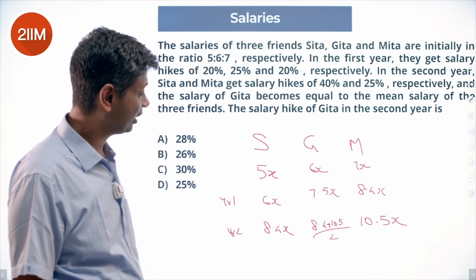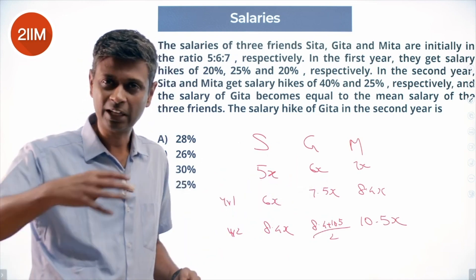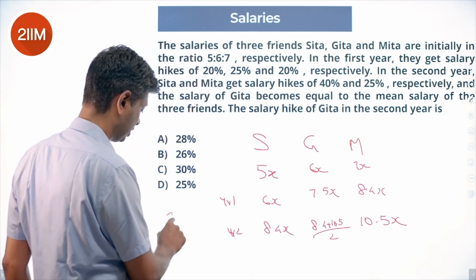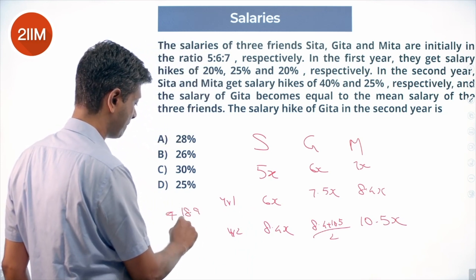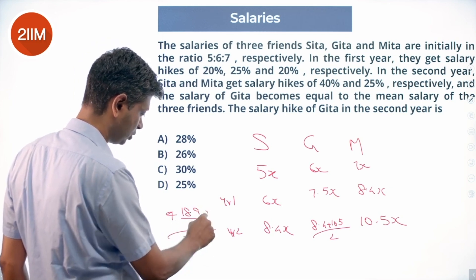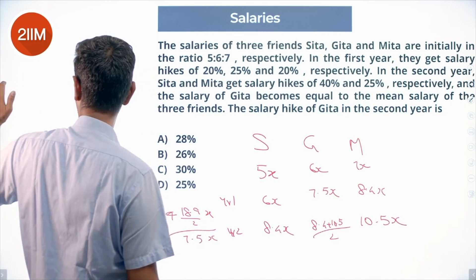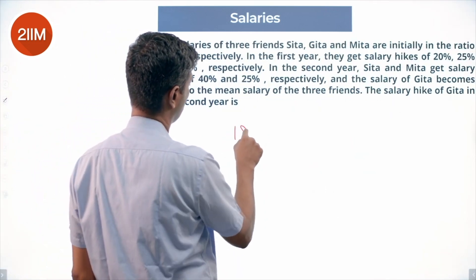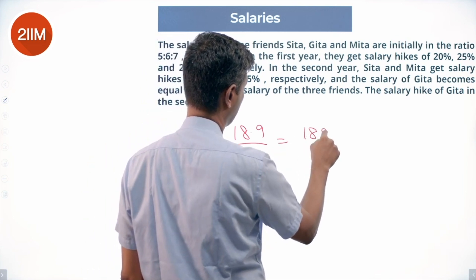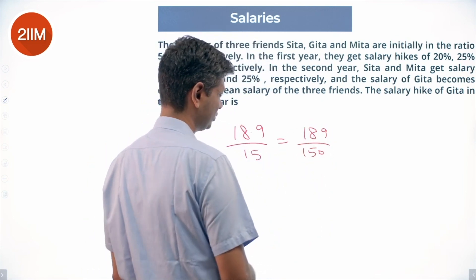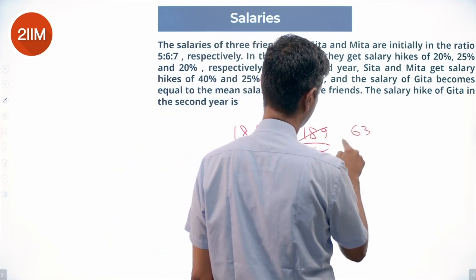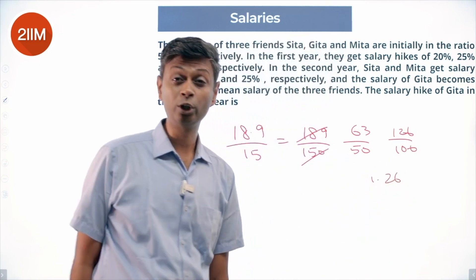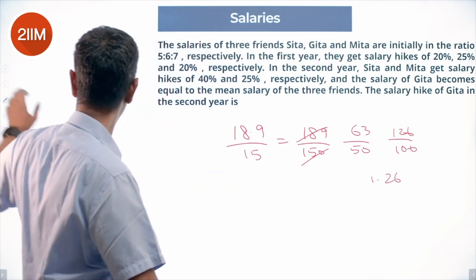To find Geeta's salary hike in the second year, we divide her year 2 salary by her year 1 salary. 8.4 plus 10.5 is 18.9, so 18.9 by 2 divided by 7.5 — both have x, which cancels. This gives 18.9 by 15, or 189 by 150. Cancelling a factor of 3 gives 63 by 50, which is 126 by 100, that is 1.26. So Geeta's salary is 1.26 times what it was, meaning the increase is 26 percent.